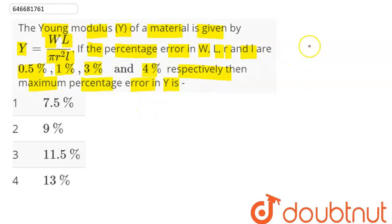We have Y = WL/(πr²l). By error analysis, we can say that ΔY/Y can be written based on the powers of each variable. Since the power of W is 1...